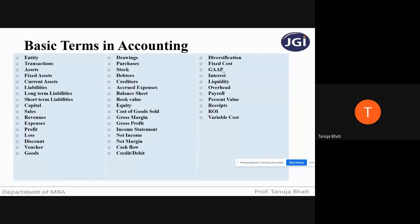GAAP stands for Generally Accepted Accounting Principles. These principles need to be followed by all accountants to perform the act of accounting. They are general rules that have been framed to help compare businesses' financial reports. Generally Accepted Accounting Principles are the principles that need to be followed while accounting.